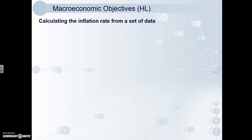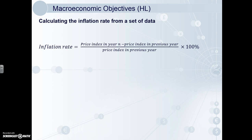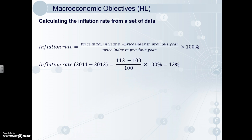Once we have the weighted price indices, it's relatively easy to calculate the inflation rate. The equation is: price index in year N minus price index in the previous year, over the price index in the previous year, times 100 to get the percentage. To find the inflation rate from 2011 to 2012, we plug the numbers in and get 12%. The price index in 2012 was 112 and the price index in the previous year was 100, divided by 100. As you can see, it's very easy when comparing to the base year — you can see without a calculator that the inflation rate in 2012 was 12%.